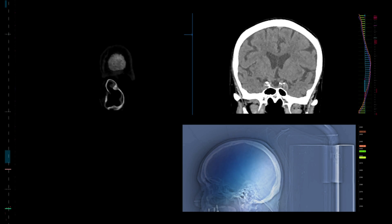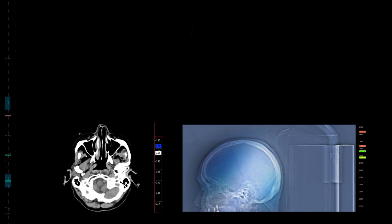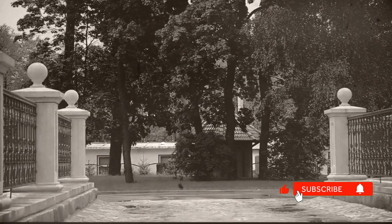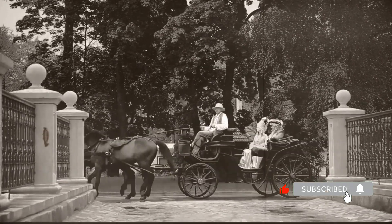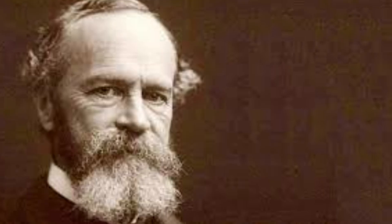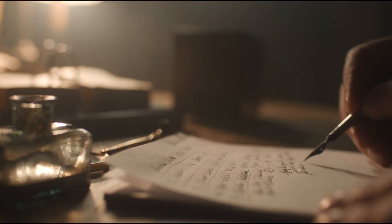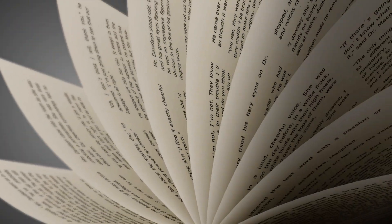Neurologist Barry Beyerstein: If 90% was inactive, brain damage wouldn't matter. But any damage causes problems. Every part works. The real origin? 1890s. Psychologist William James wrote, 'We only use a fraction of our mental potential.' Not our physical brain. It got twisted for 130 years.